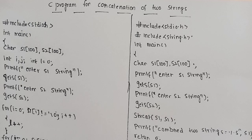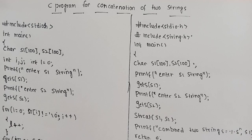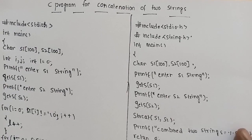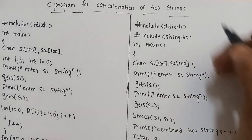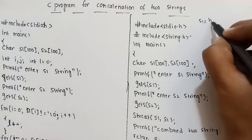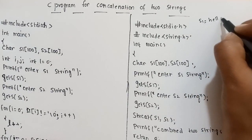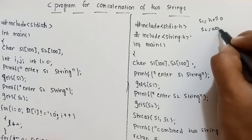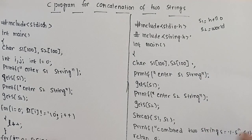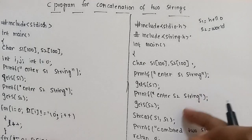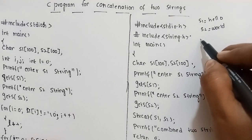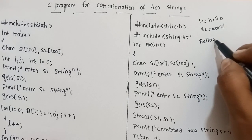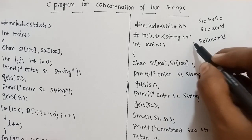So, concatenation. Suppose we have two strings: S1 is called 'Hello' and S2 is called 'World'. When we concatenate S1 and S2, the result is called 'Hello World'.